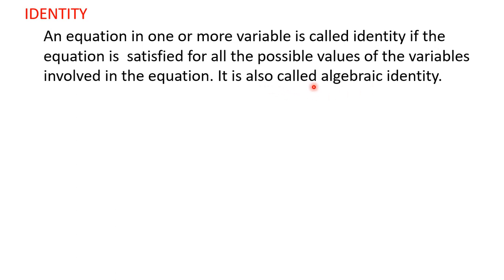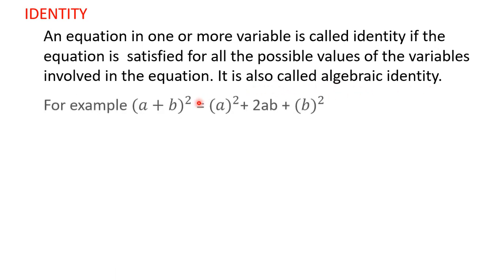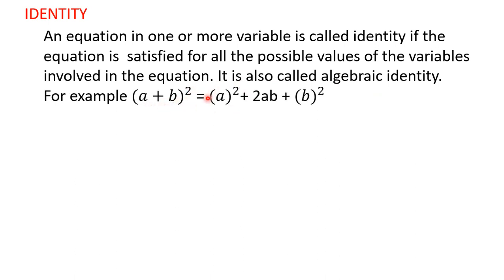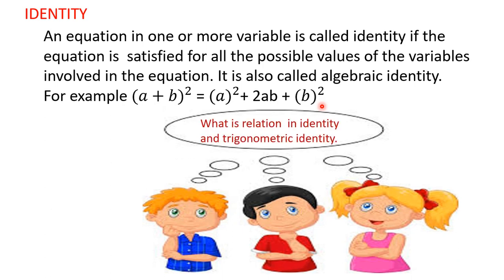This identity is also known as algebraic identities, as we have learned in previous classes. For example, (a + b)² = a² + 2ab + b². This equation is known as an algebraic identity because when we substitute numerical values for a and b on both sides, the left-hand side is always equal to the right-hand side for any values of a and b.